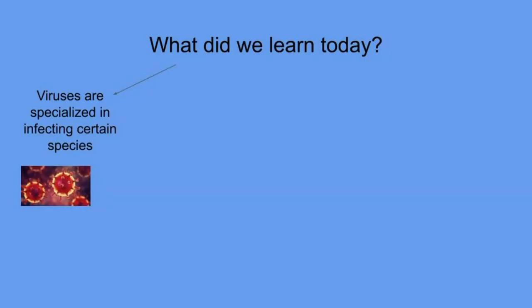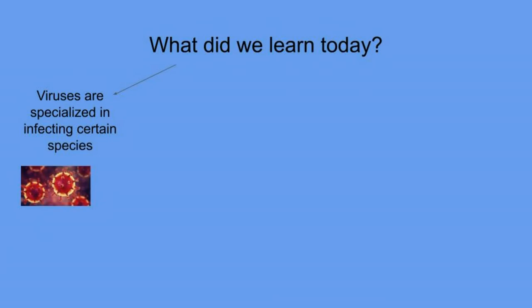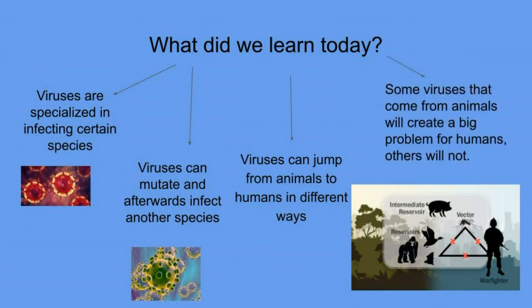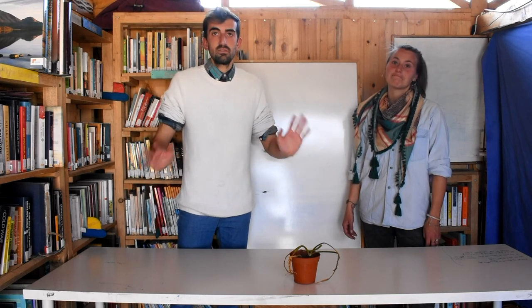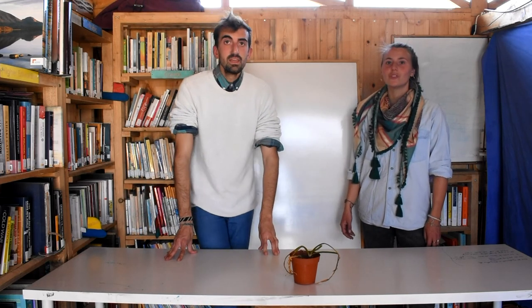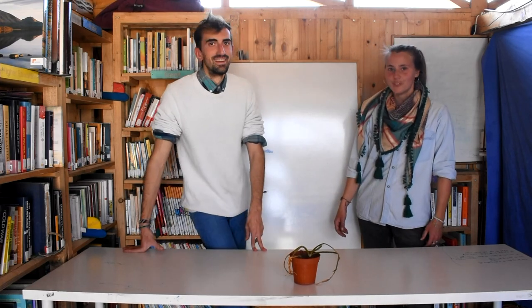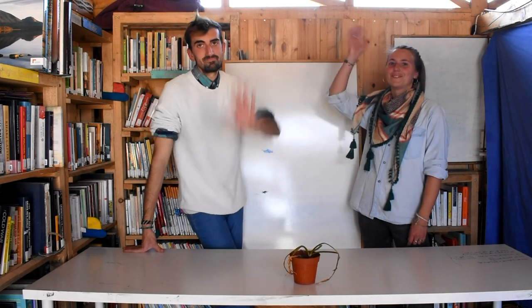What did we learn today? Viruses are specialized in infecting certain species. Viruses can mutate and afterwards infect another species. Viruses can jump from animals to humans in different ways. Some viruses that come from animals will create a big problem for humans, others will not. I think with this we can finish for today. You've learned a lot again, and we'll see you next time. Bye bye.